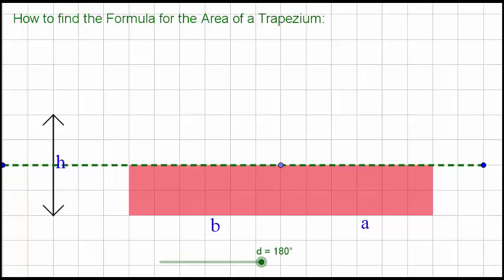The length is a plus b and our new height is half of h, so we can put half of h there. And everyone knows how to find the area of a rectangle—it's just length times width. So the area of a trapezium is half h times by a plus b.